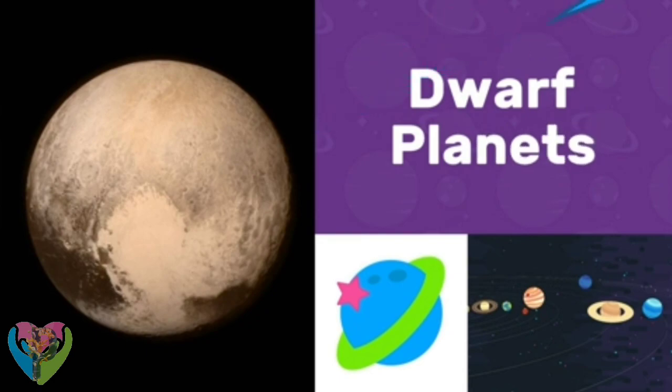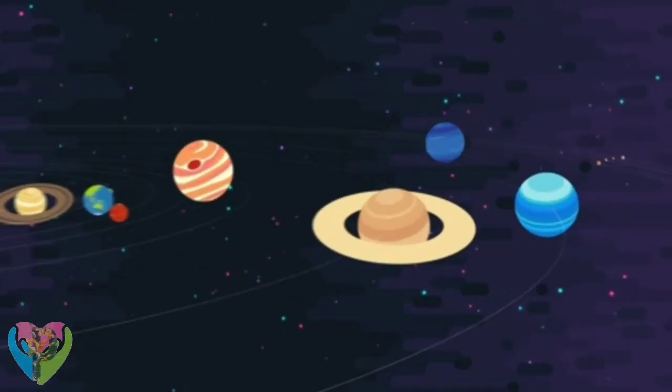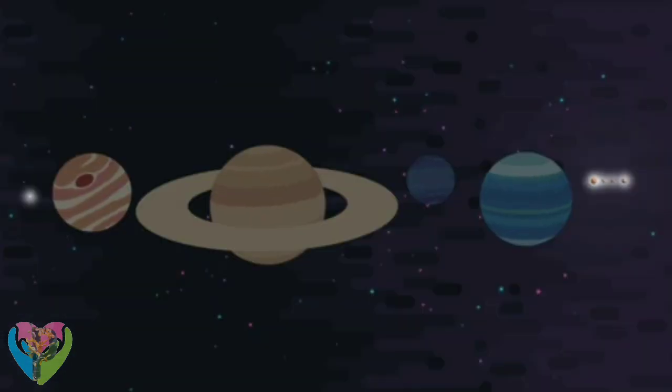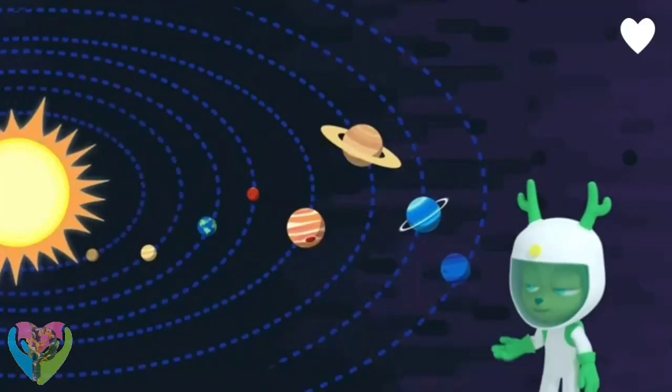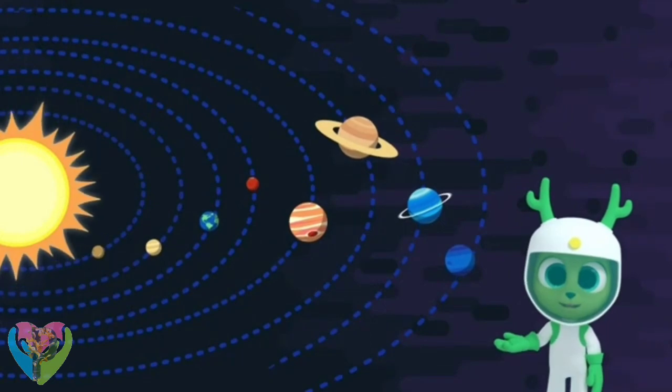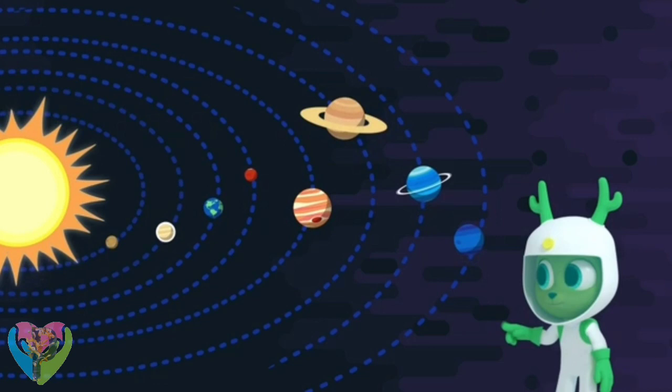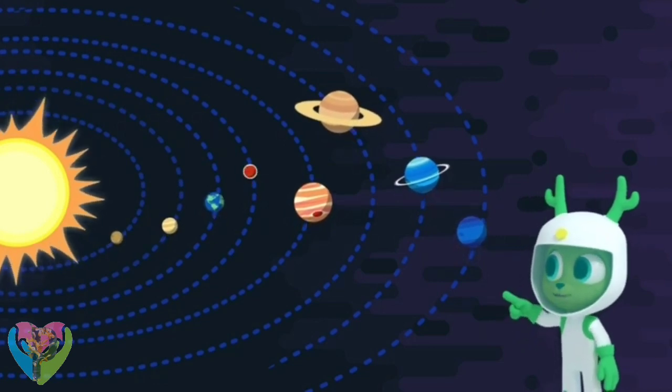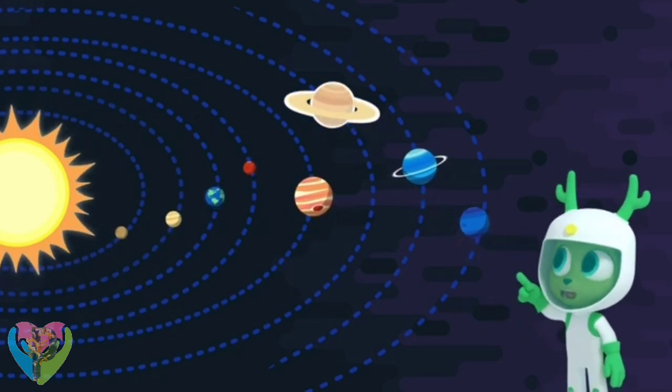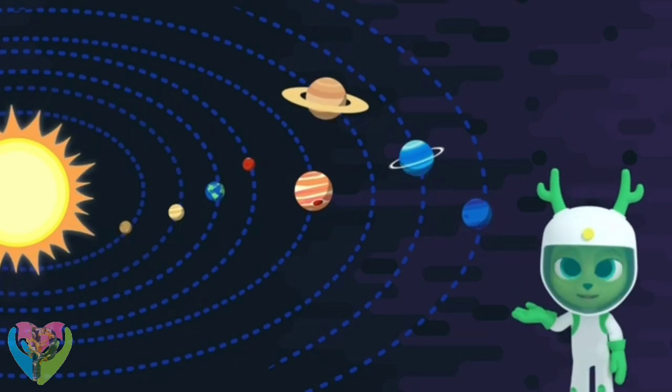Dwarf planets. Some planets in our solar system are actually dwarf planets. Those are the eight planets in our solar system. Do you know their names, Chester? Mercury, Venus, Earth, Mars, Jupiter, Saturn, Uranus, Neptune.